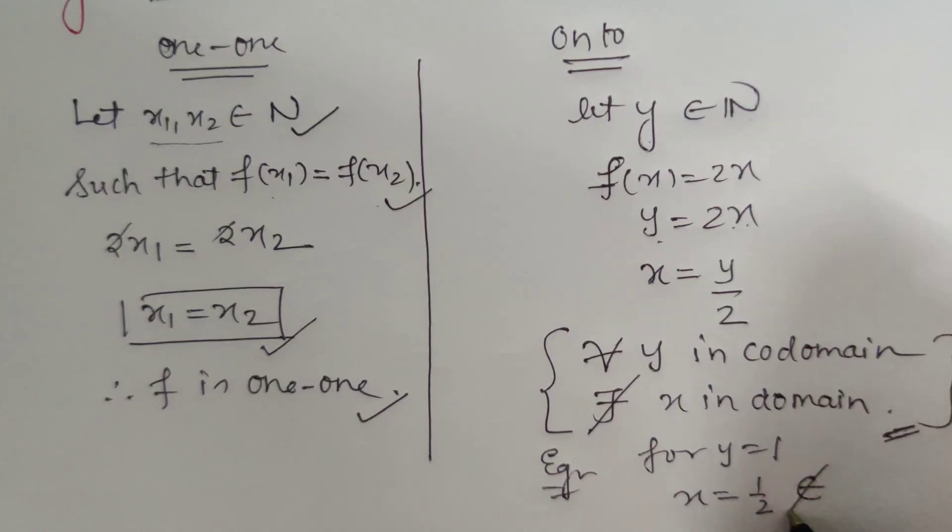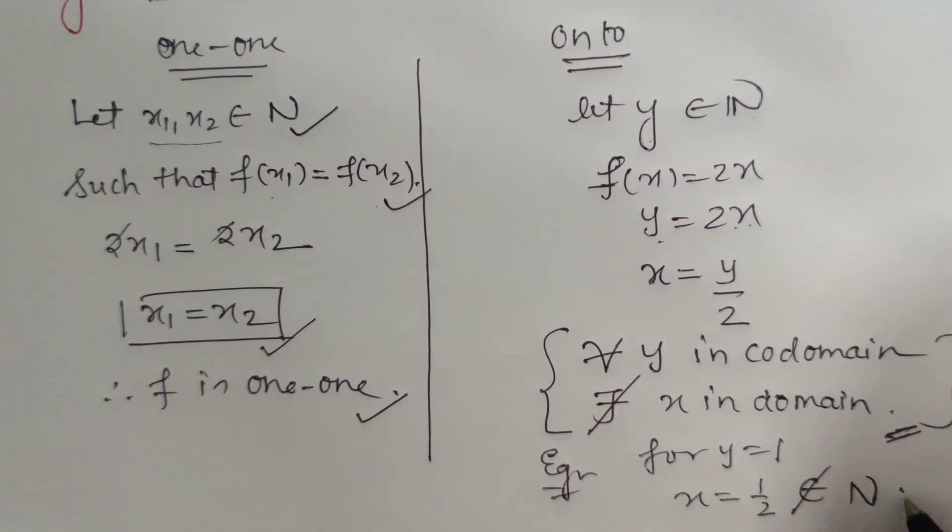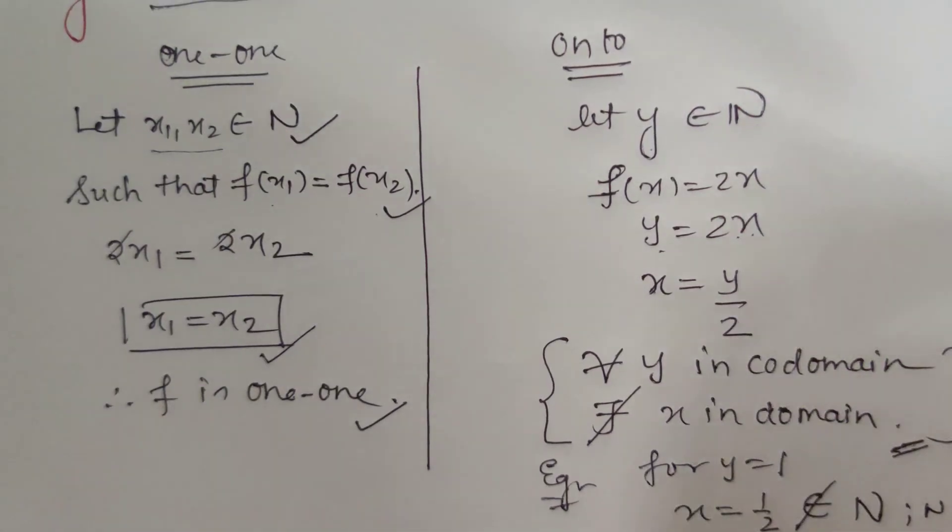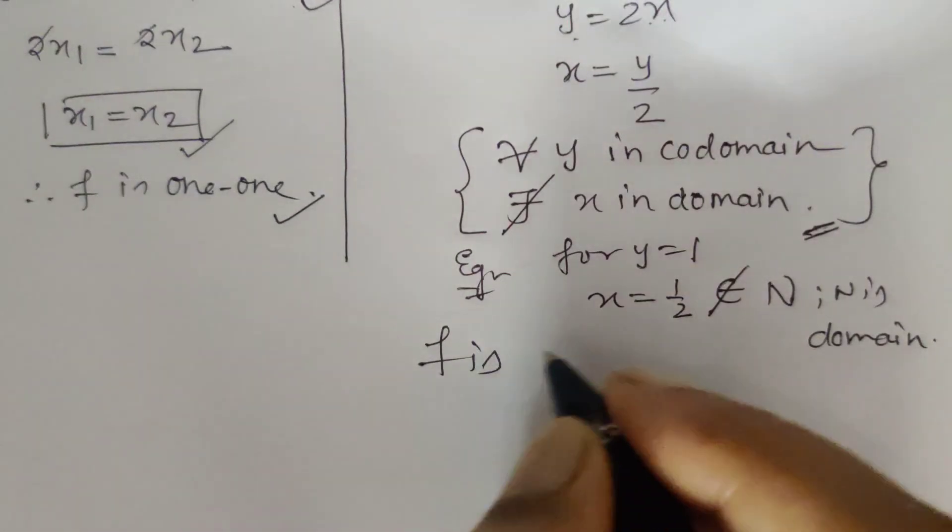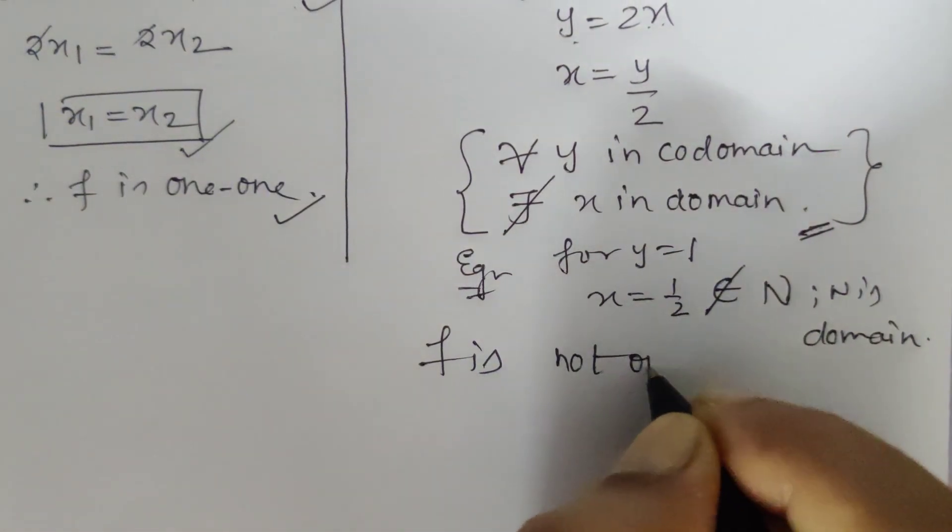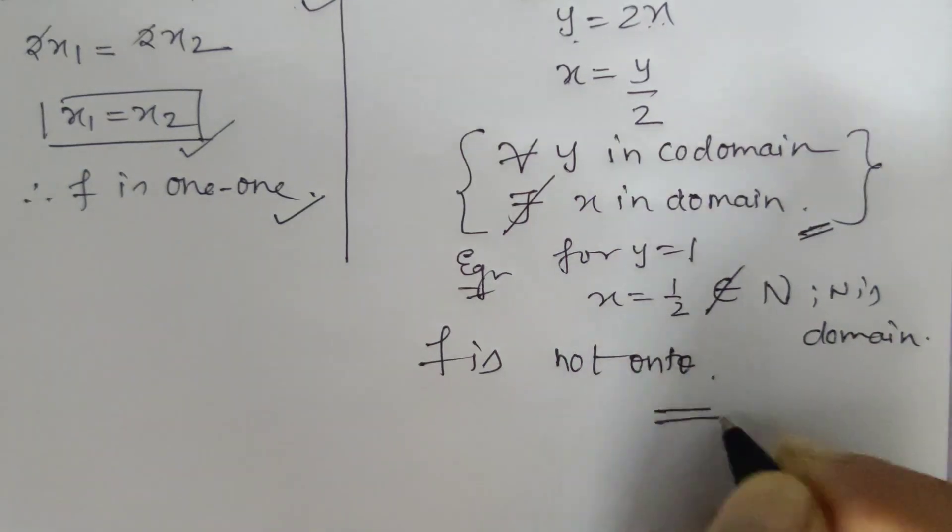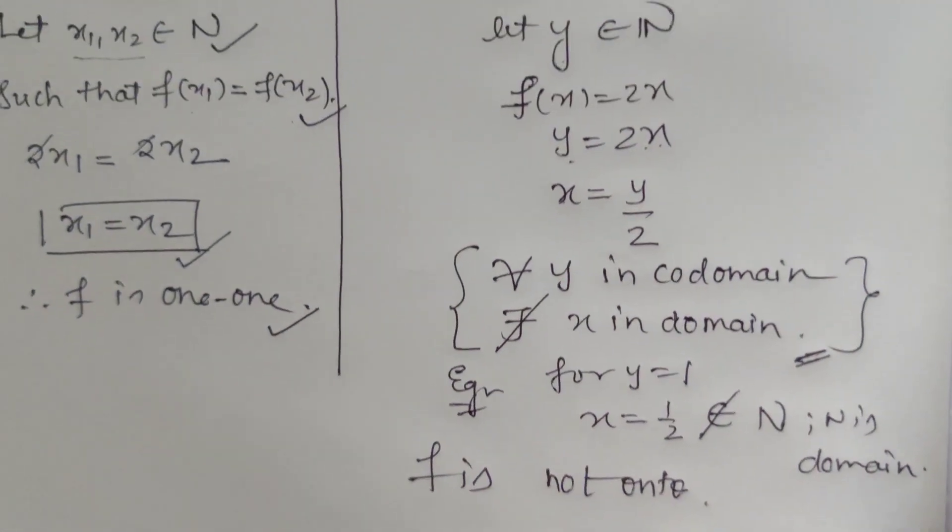Which does not belong to the set of natural numbers where N is the domain. So this is the reason why f is not onto. F is not an onto function. I hope this problem is clear to everyone. Thank you.